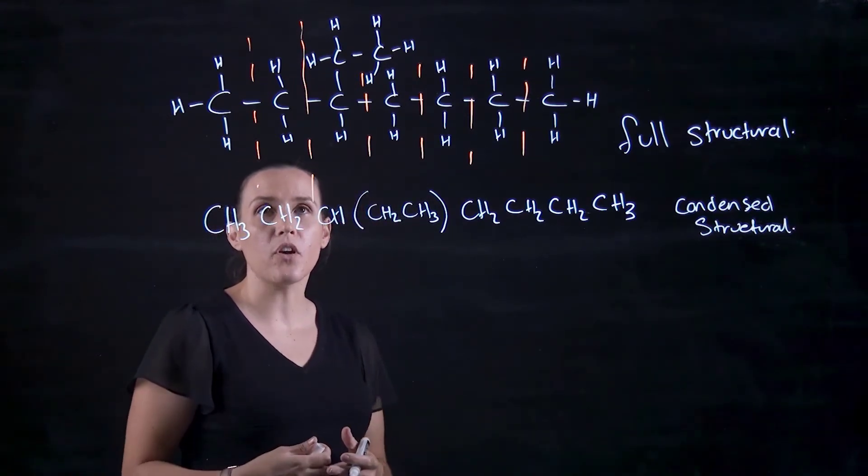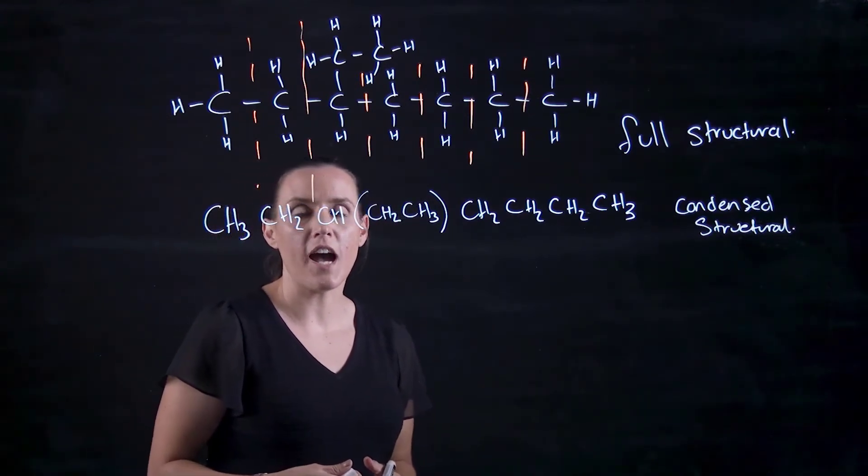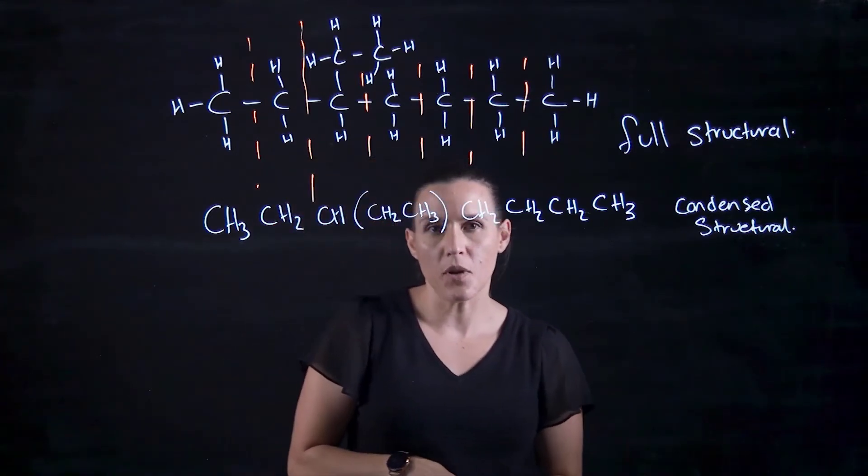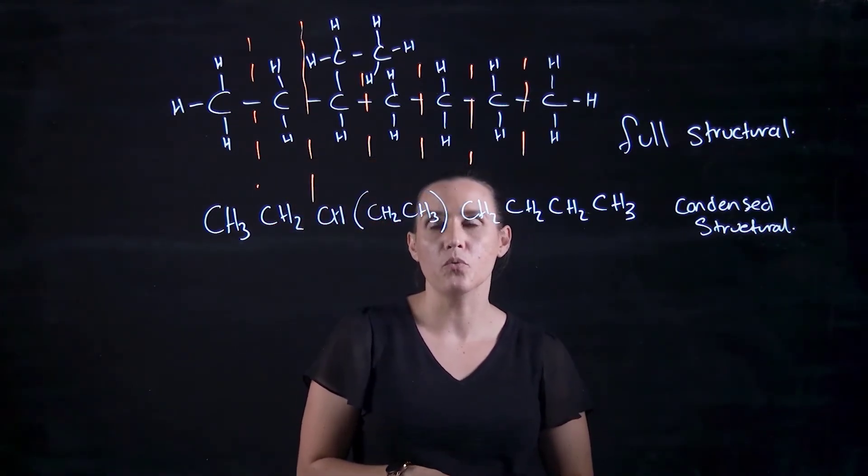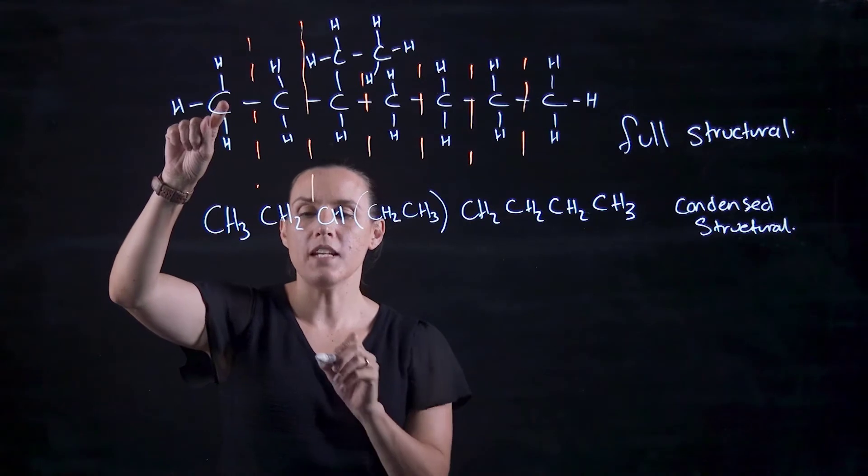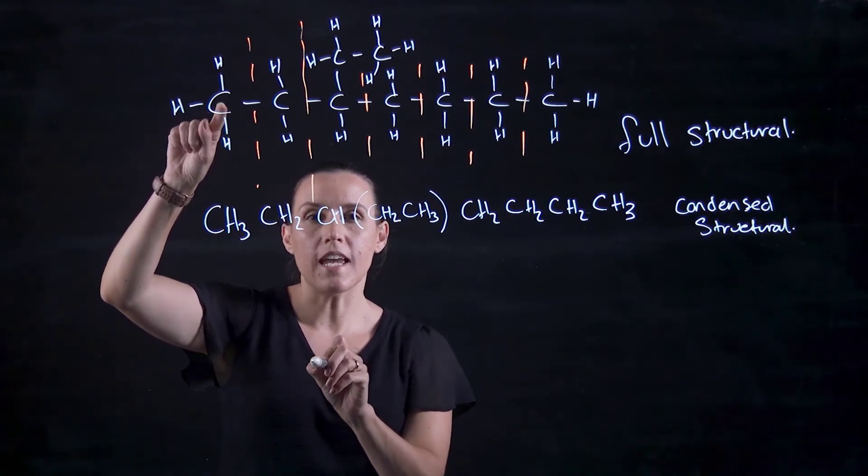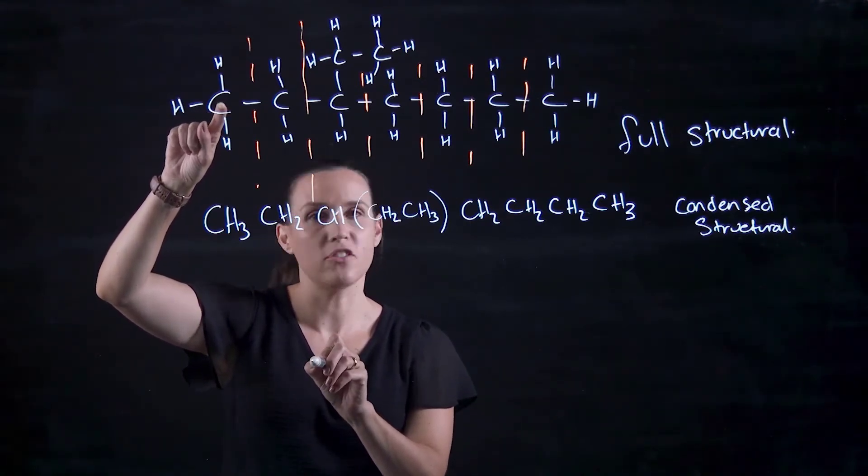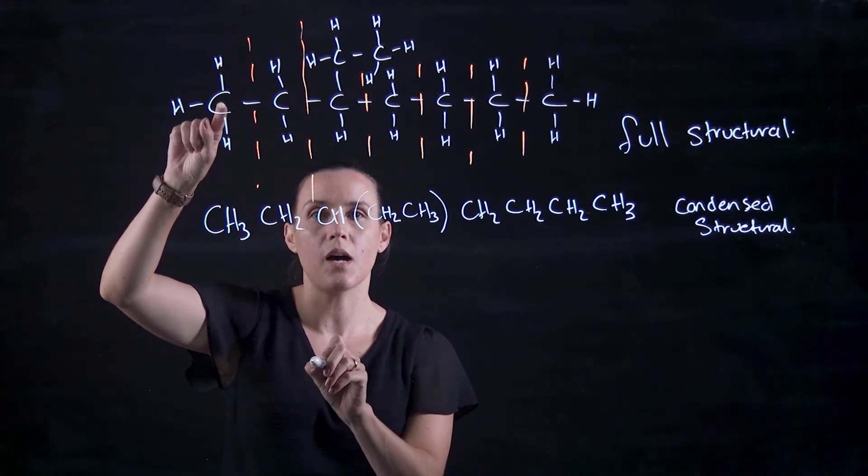The last one I want to go through is writing out the line diagram. So for this one, I will work from the full structural. Pen to paper is your first carbon. Each point is a carbon. Hydrogens are not drawn in if they're bonded to carbon.